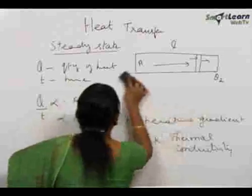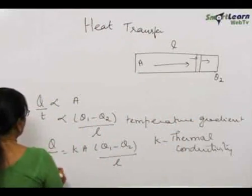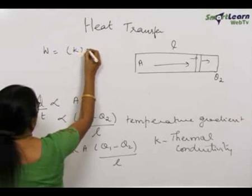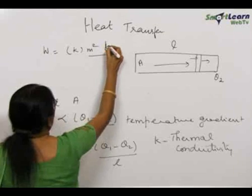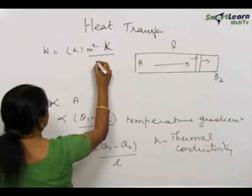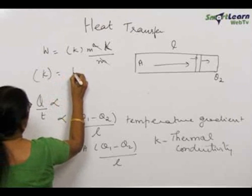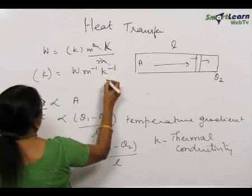Let us now find the unit for K. What is Q by T? Q by T is watts, this is meter square, this is Kelvin capital K and this is meter. So the unit of K is watts per meter per Kelvin.